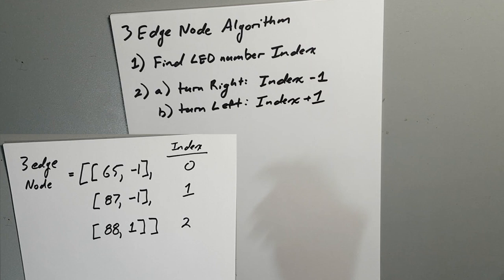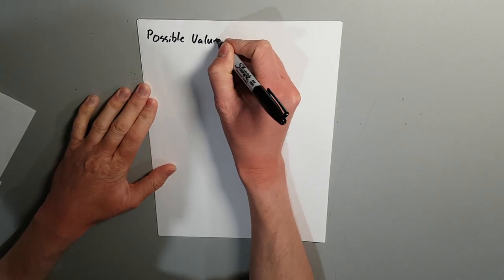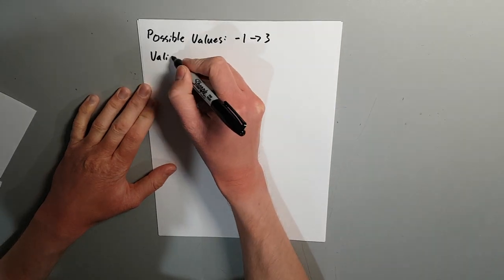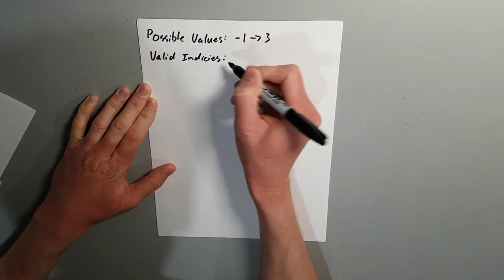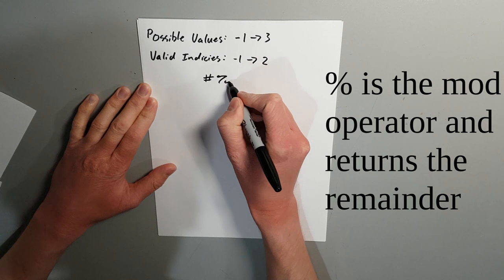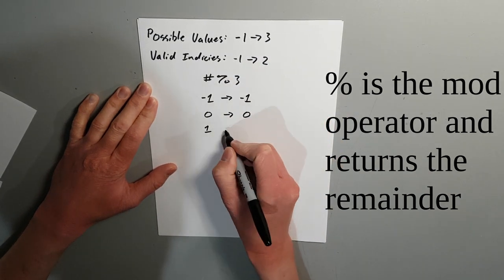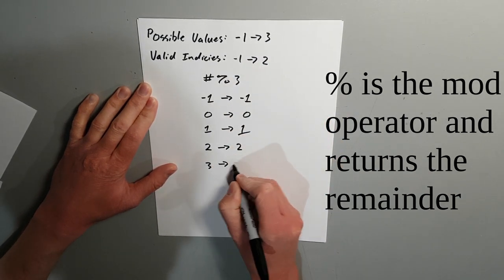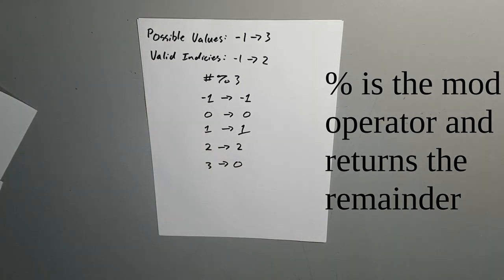The plus 1 and minus 1 is then used to progress down the strip. It is possible to get an index of negative 1 and 3 using this algorithm. To ensure that we always have a valid index, we simply calculate the remainder of the new index divided by 3. Note that negative 1 just means to take the last element. It is equivalent to index equals 2 in this case.